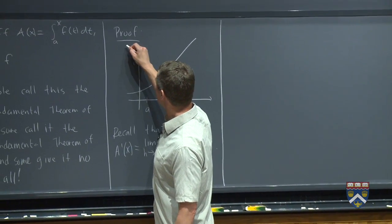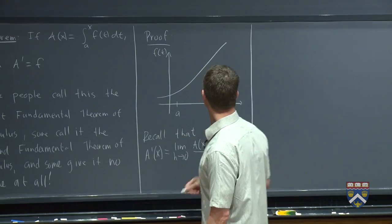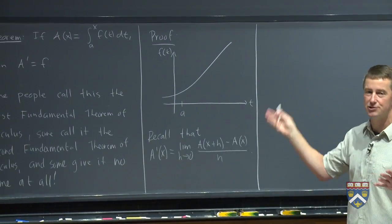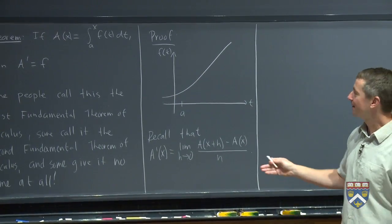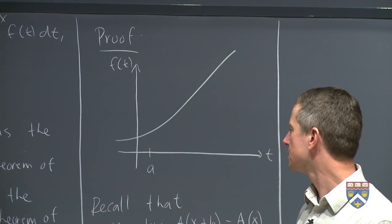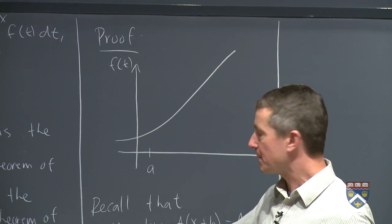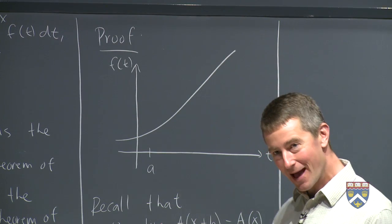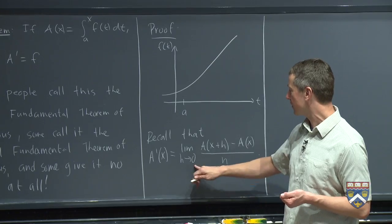So suppose that I have some function, little f of t. So I need to draw it. I mean, I need to draw some graph, but we'll see in the end that whether I draw this graph increasing or decreasing, it doesn't make any difference. We're trying to figure out something about a prime.